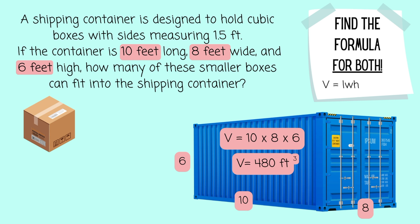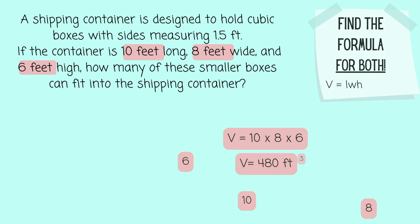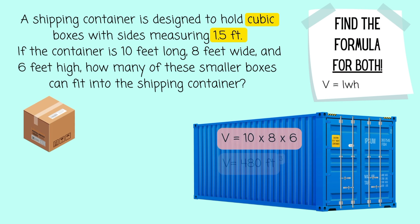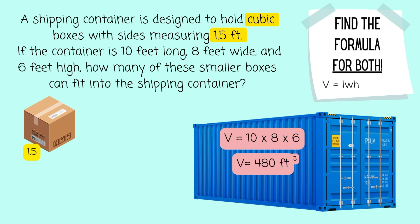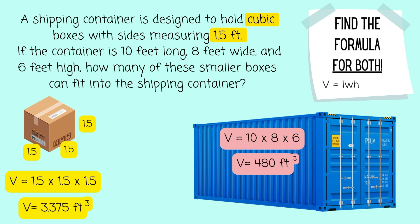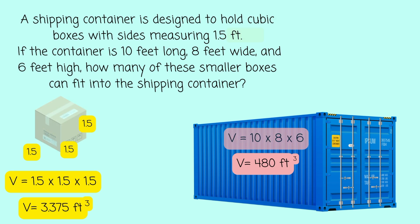Now let's find the volume of the little box that's going to fit inside. It gives me 1.5 feet, and because all of the sides are the same, I follow the same formula: 1.5 times 1.5 times 1.5, which gives me a volume of 3.375 feet cubed.